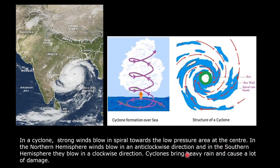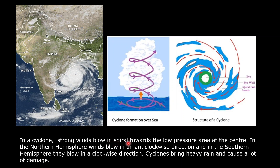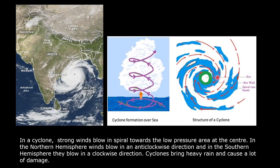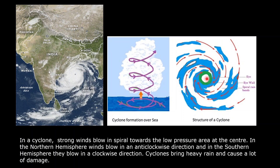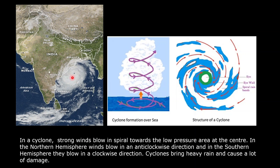A cyclone is a strong wind which blows in a spiraling manner towards a low pressure center. Here in this diagram you can see how the winds are moving in a spiraling manner towards a low pressure center. This low pressure center is known as the eye. You can also see here that the cyclone is moving towards the coastal area of India, and this central dark point is known as the eye.